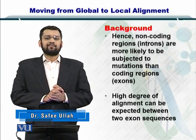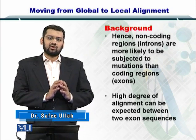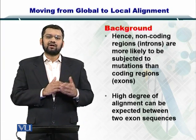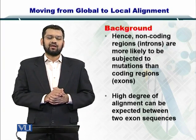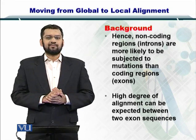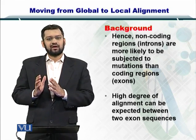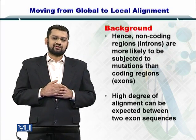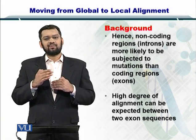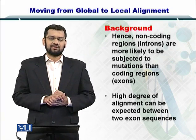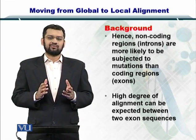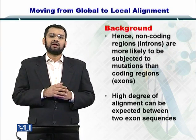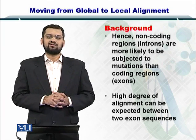Because non-coding regions are not translating into functional counterparts, there is a higher chance of their evolution and therefore they are less conserved. If you talk about the coding sequences, they are coding for proteins and are tightly regulated and conserved by nature. So if you have two DNA sequences of coding regions, there is a very high probability that you will have a very nice alignment. But if the sequences have non-coding regions, the alignment will not be a good one, as evolution would have led to a lot of mutations in the sequence.